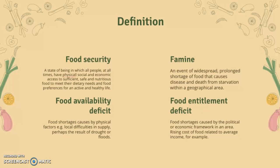Food availability deficit is food shortages caused by physical factors — local difficulties in supply, perhaps as a result of drought or flooding. Food entitlement deficit is food shortages caused by the political and economic framework in an area, such as rising cost of food relative to average income — not having the means to access food even though it is already there. Food availability deficit means the food is not even there in the first place, physically.